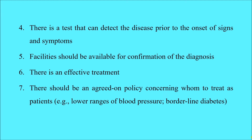Similarly, in blood sugar estimation, we have a diabetic range and a normal range for both fasting and postprandial values. In between these ranges we have Impaired Fasting Glucose (IFG) and Impaired Glucose Tolerance (IGT). These people are neither diabetic nor at normal blood sugar levels. That is why there should be an agreed-upon protocol about whether to start medication, go for another type of management, or monitor these individuals more frequently before deciding what to do.